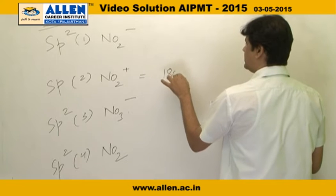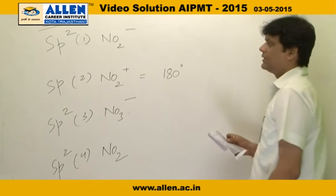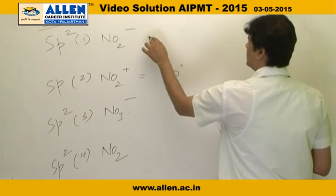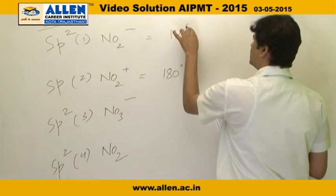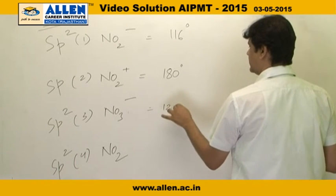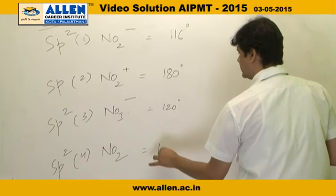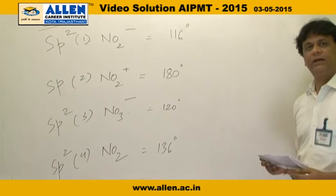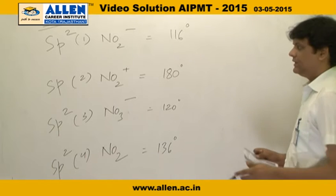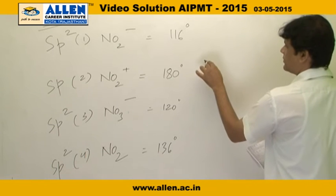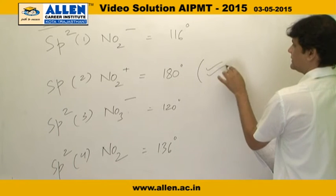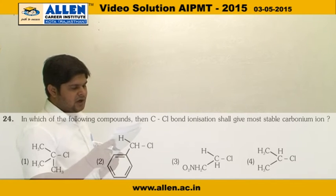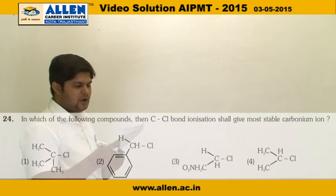So the bond angle in NO2⁺ will be 180 degrees. In NO2⁻, NO3⁻, and NO2, the bond angles are 116 degrees, 120 degrees, and 136 degrees respectively. So the maximum bond angle at nitrogen is in option second, NO2⁺. The correct answer is the second option.